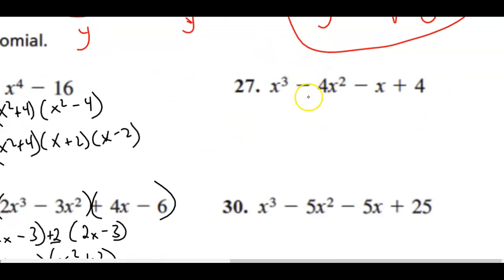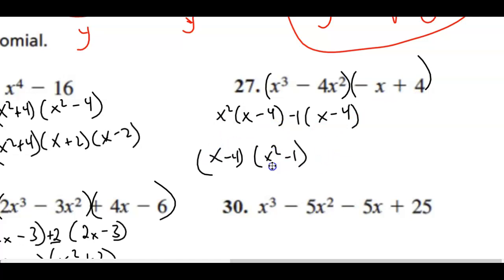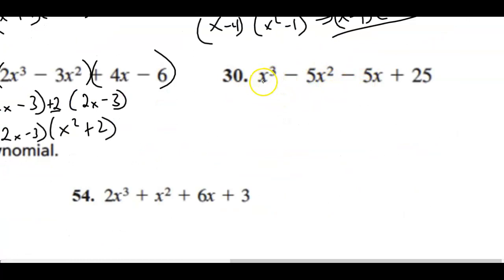For the next one I can use grouping again. I factor out x squared leaving x minus 4, then factor out negative 1 from the last terms, also leaving x minus 4. Factoring out x minus 4 from both sides, I'm left with x squared minus 1, which is a difference of two squares. Final answer: (x minus 4)(x plus 1)(x minus 1).